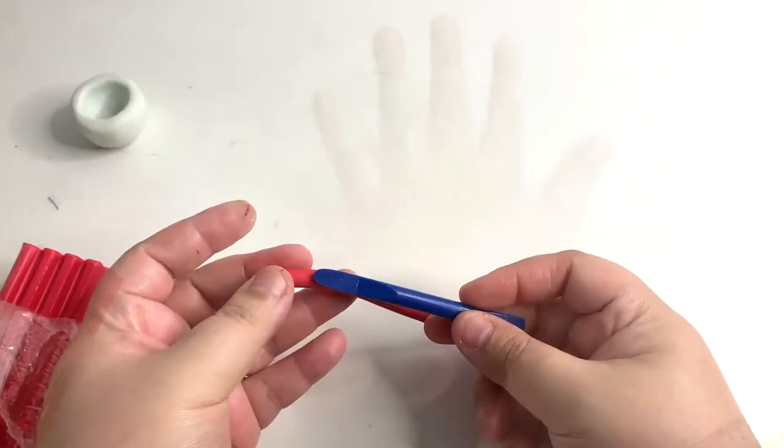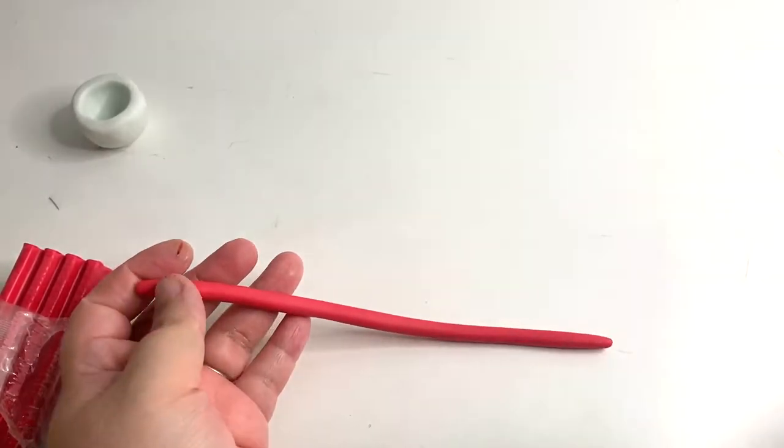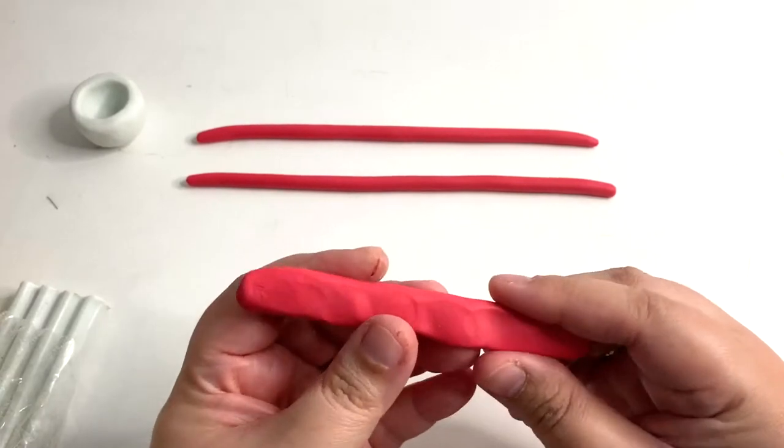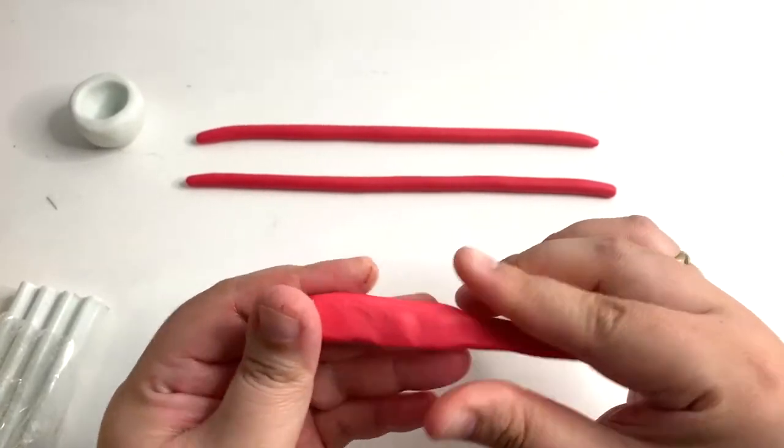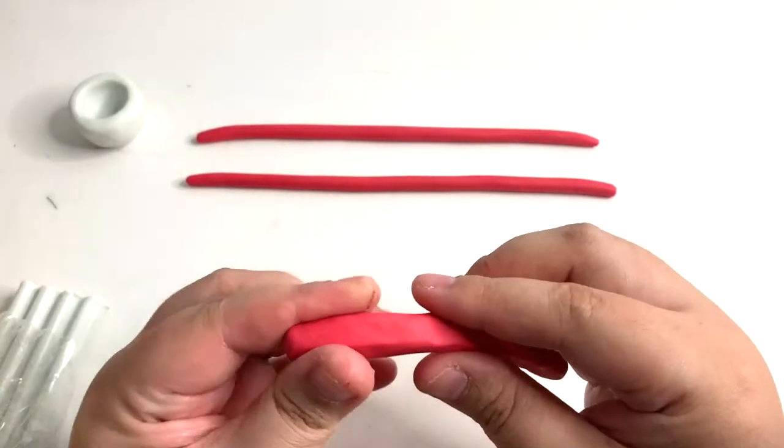Use the short blue tool again to measure the consistency of the thickness. If you have a flat coil like this, stop rolling and fix it. If you are going to keep rolling, it's going to be worse.